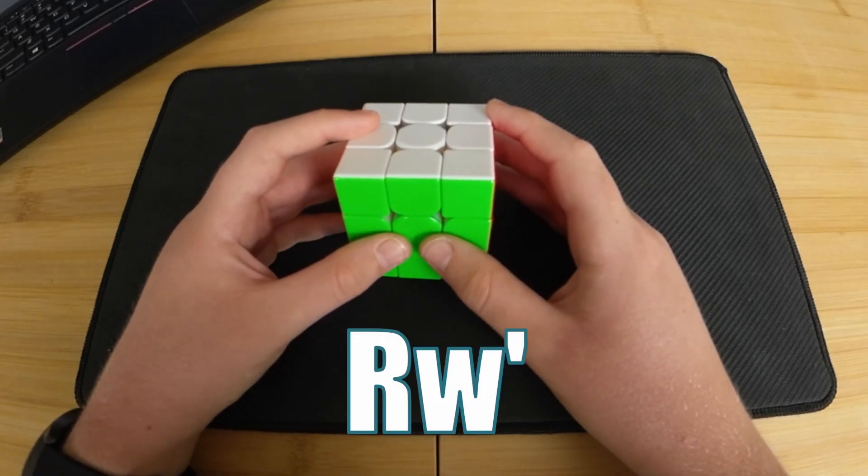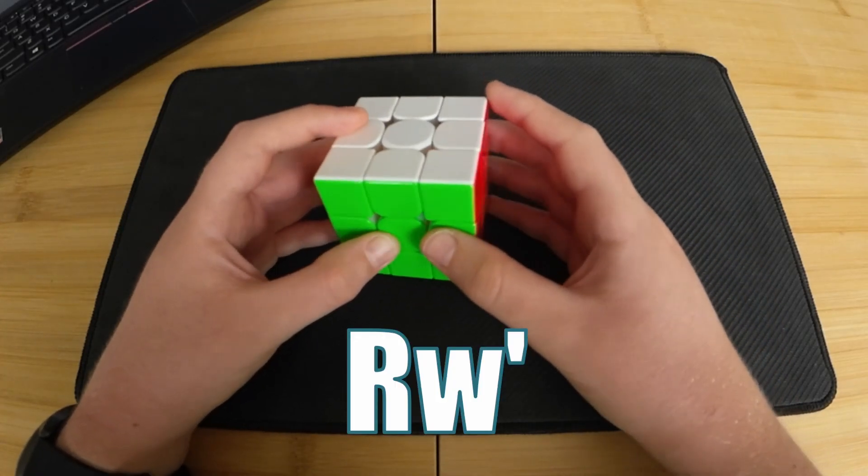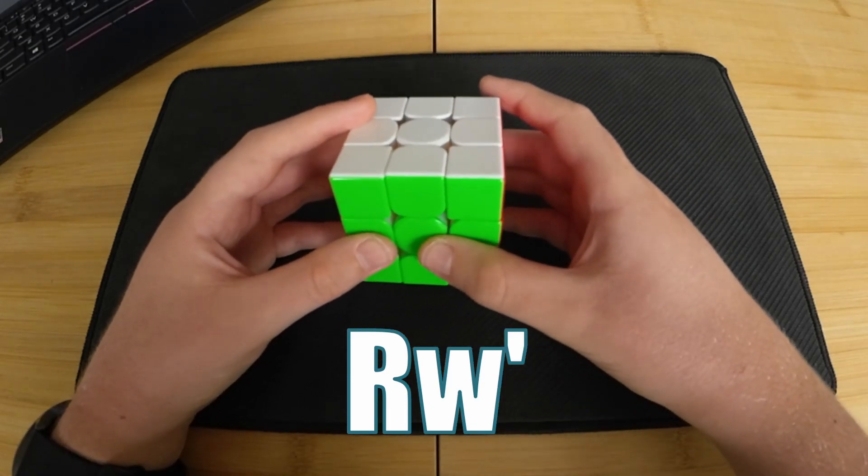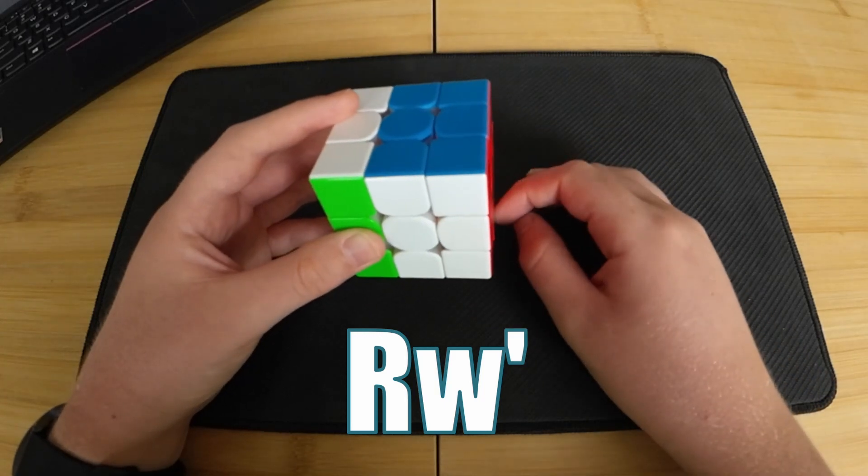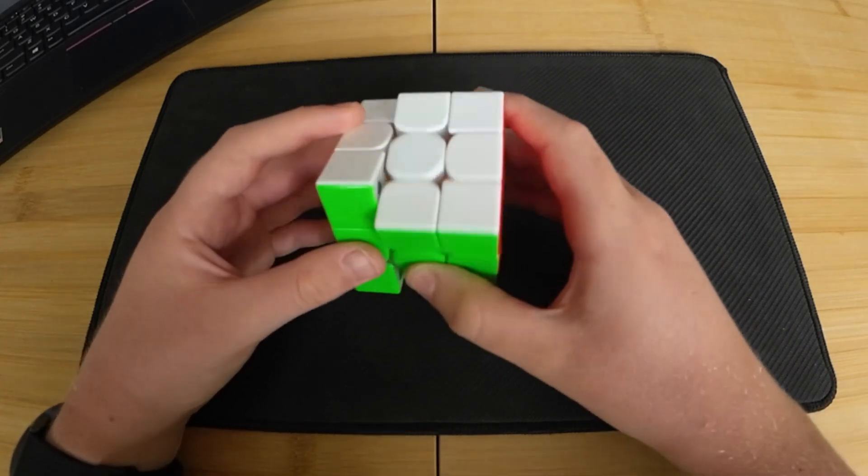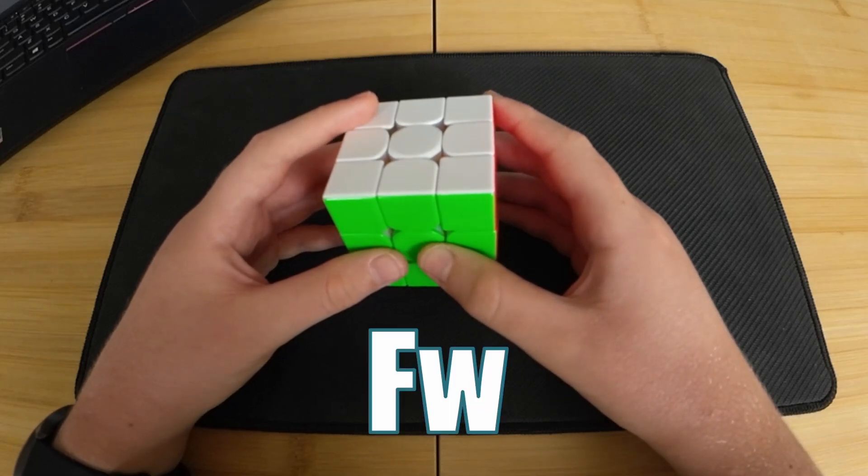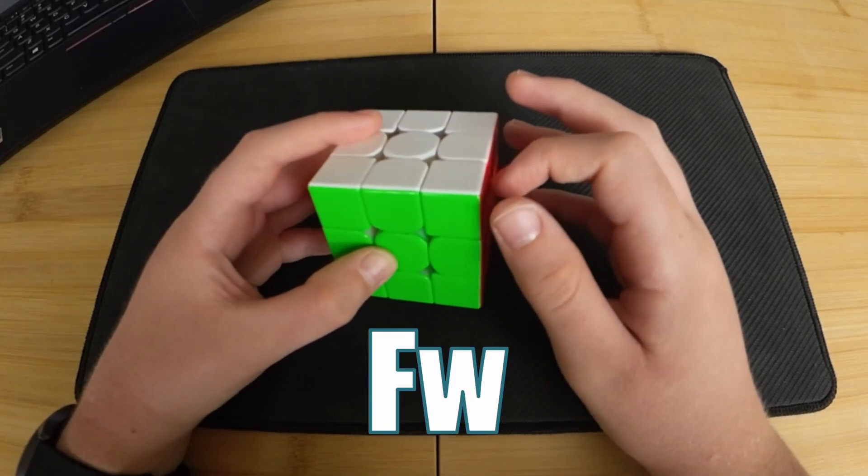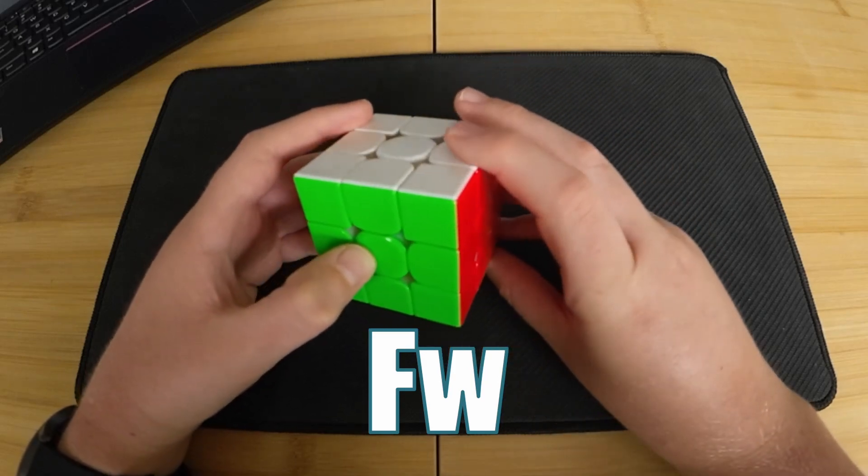For example, rw' would be just like a normal r' except you also grab the middle layer with it. So this would be rw'. Another example is fw', which would be just like a normal f' except we also are grabbing the inner layer with it, like that.